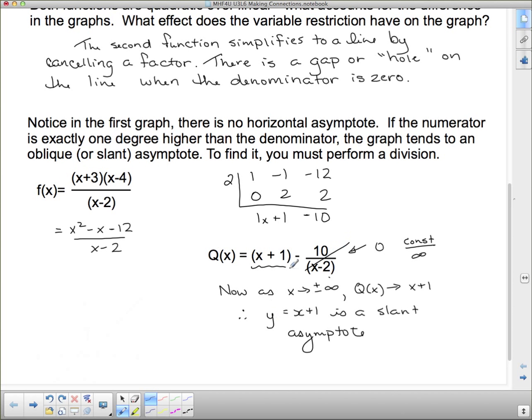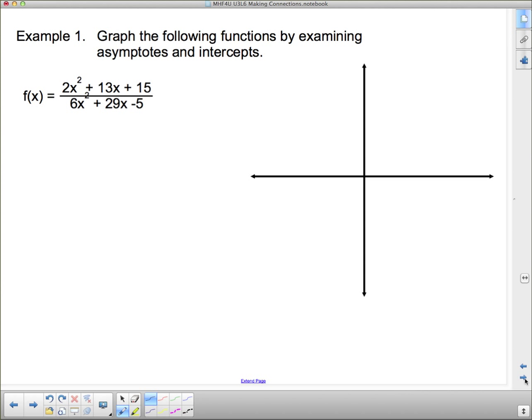So to find the slant asymptote, you just have to make that division, and then your quotient part is your slant asymptote. The remainder part is going to go to 0. So let's have a look at an example here. Graph the following function by examining asymptotes and intercepts. The first thing we want to do is factor it. If we factor it, we find not only where the vertical asymptotes are, but we can also possibly simplify the thing. So if I factor the numerator, the numerator is going to be 2x and x.